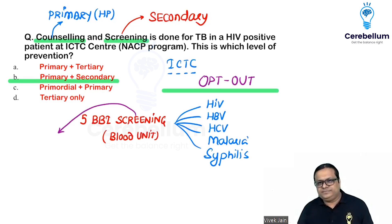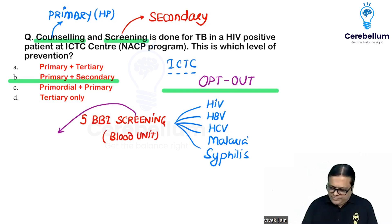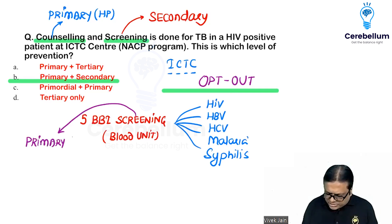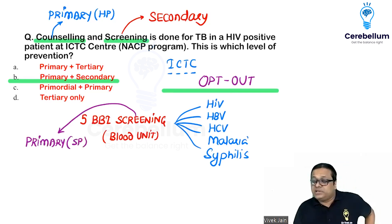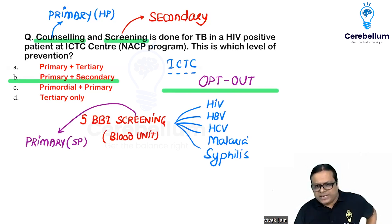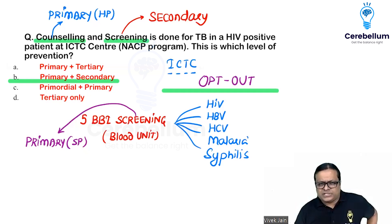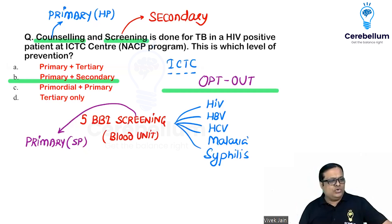The level of prevention for screening donated blood is primary — it is specific protection for the recipient. Remember: screening is almost always secondary, but when it is prospective in nature and done for others' benefit, it becomes primary level specific protection. So be careful in the exam — screening is secondary 95–99% of the time, but it may sometimes be primary.